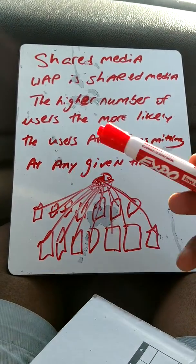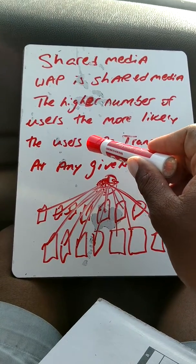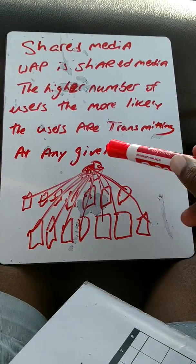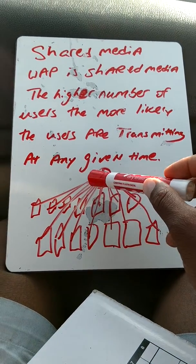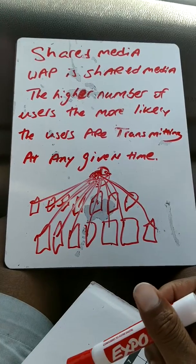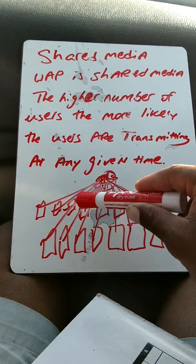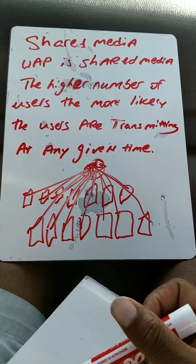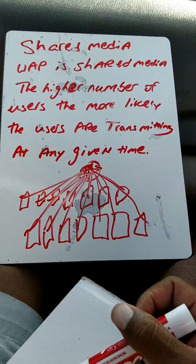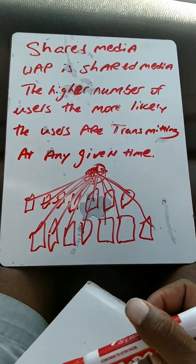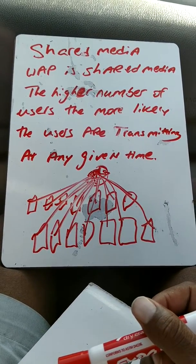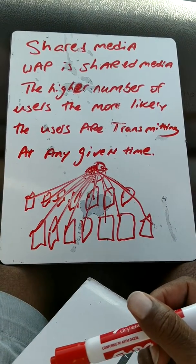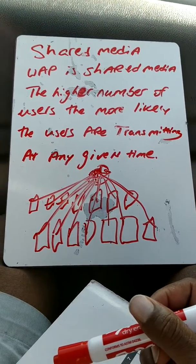The rule, or the concept is, the higher the number of users, the more likely that users are transmitting at any given time. Because a wireless access point is using a shared media domain, it is not using a collision domain, as opposed to a device such as a switch. So when you have a bunch of devices sending frames to the access point at any given time, with a higher number of devices, the concept of a collision occurs. It's similar to a bunch of people being in a room, and one person is trying to talk over the other — you're not likely to have a good conversation, because you're trying to speak over everybody else. It's the same concept of shared media.